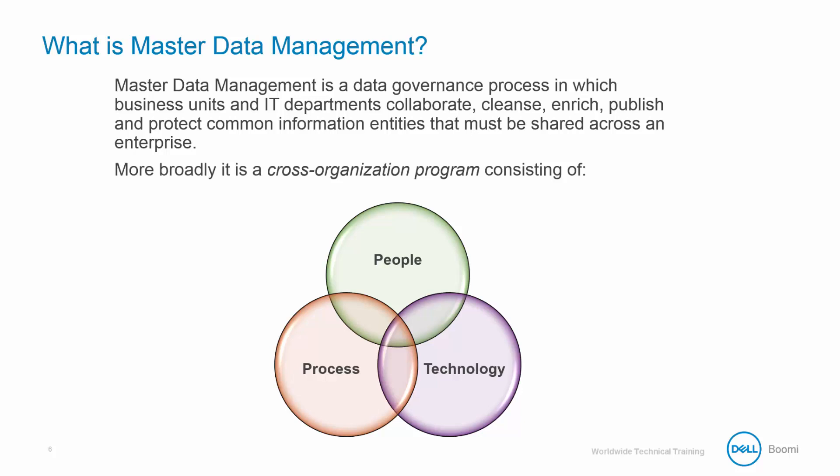So what does this mean? Simply put, MDM allows you to identify data that you share across multiple applications and creates a single version of that data for each application to reference. For instance, many applications use customers' contact information. Rather than each application using the contact information each has collected on their own, they can reference the same contact information from the MDM platform. This is what MDM can do at its most basic form.